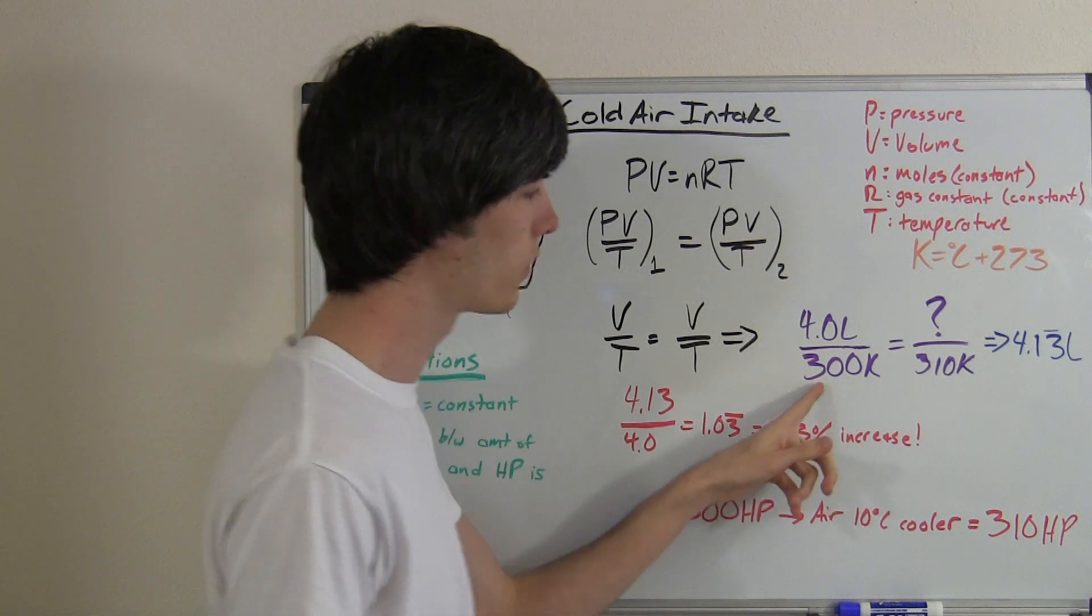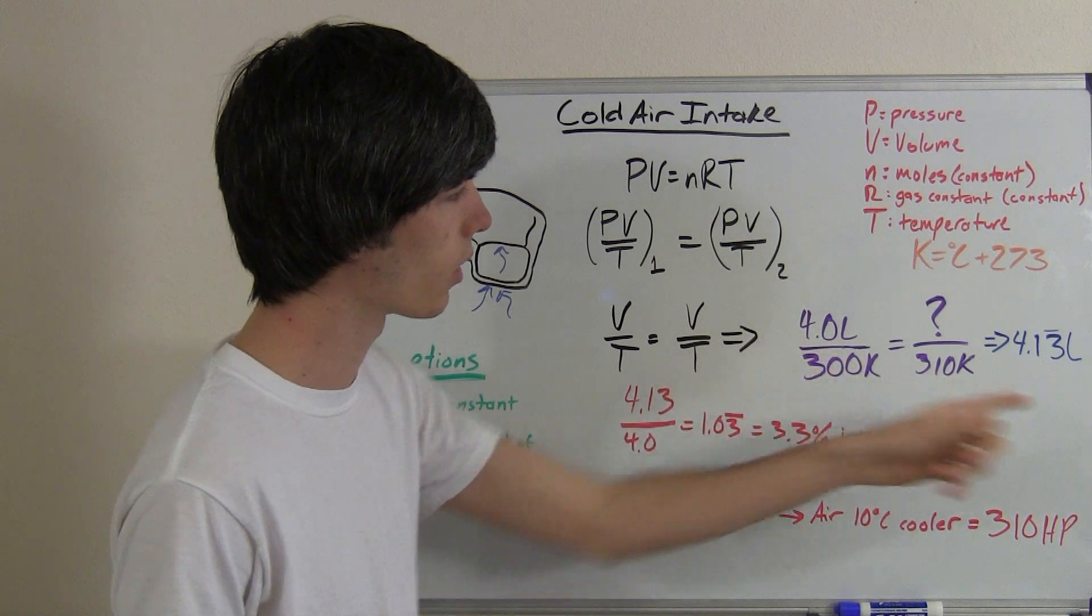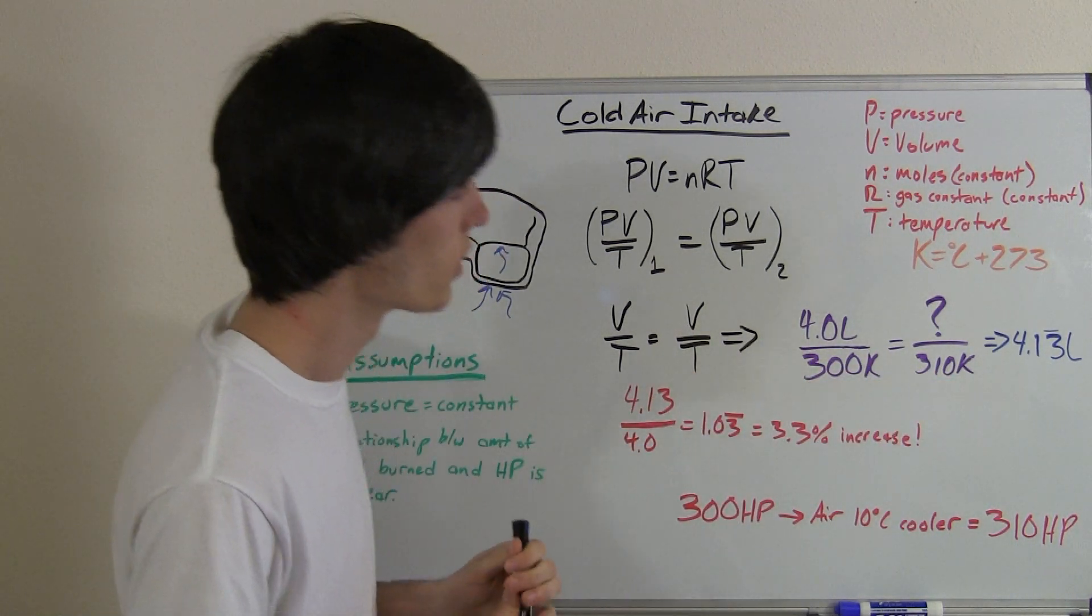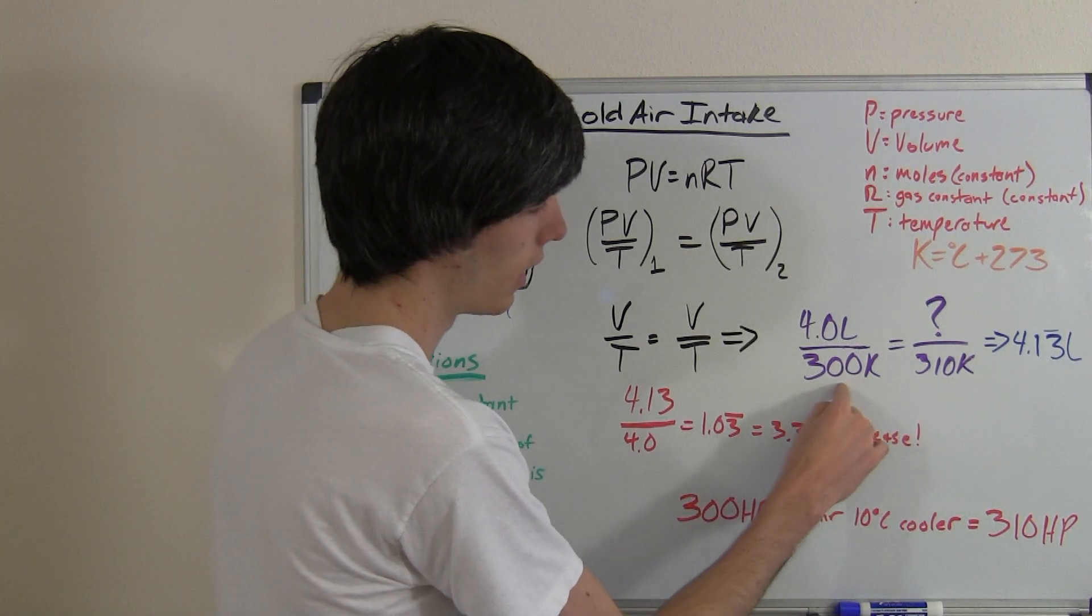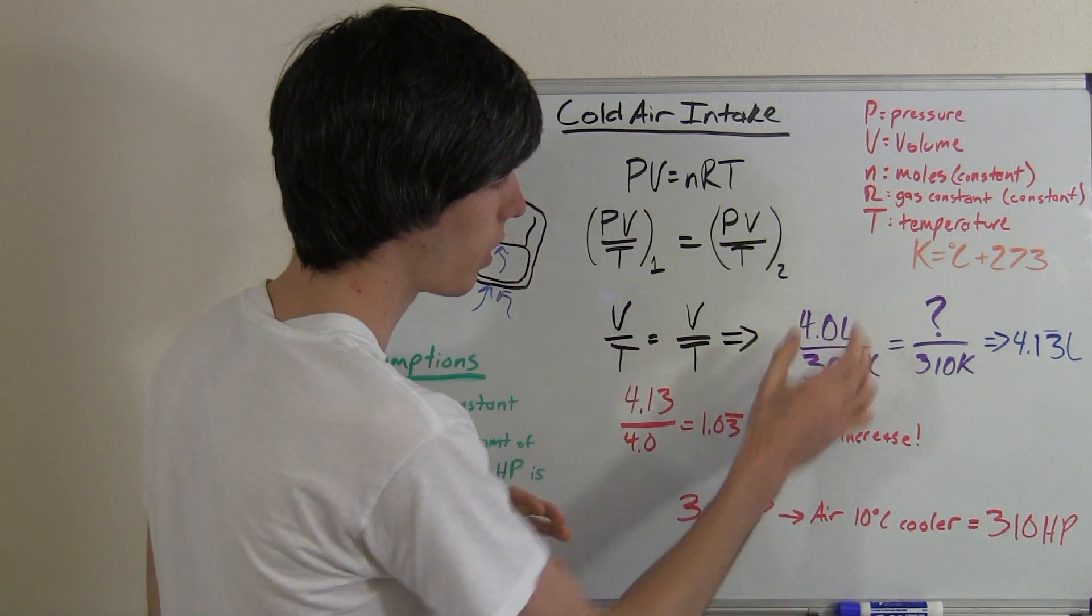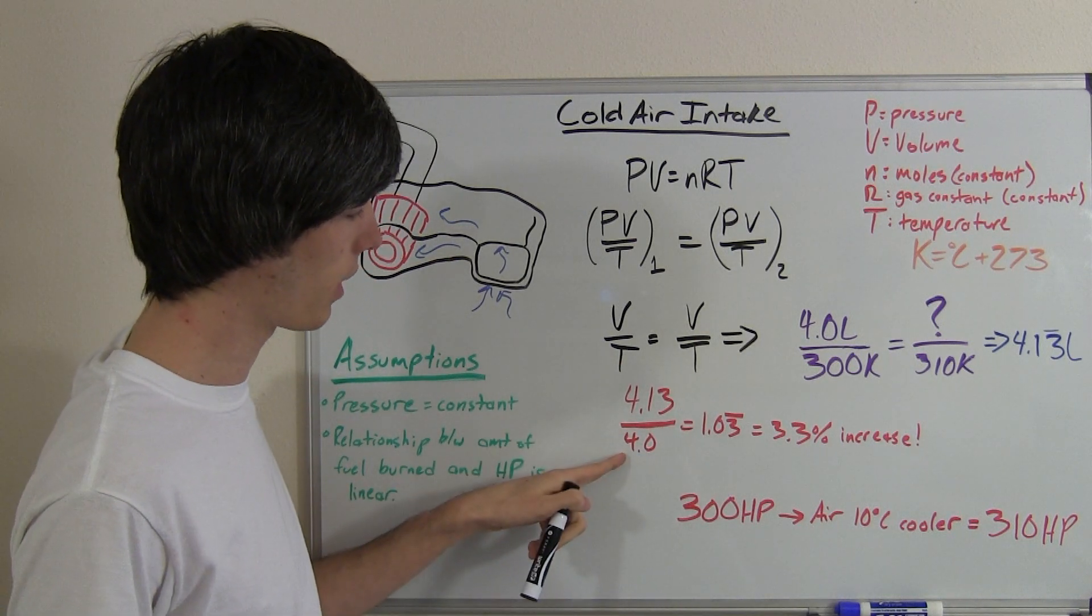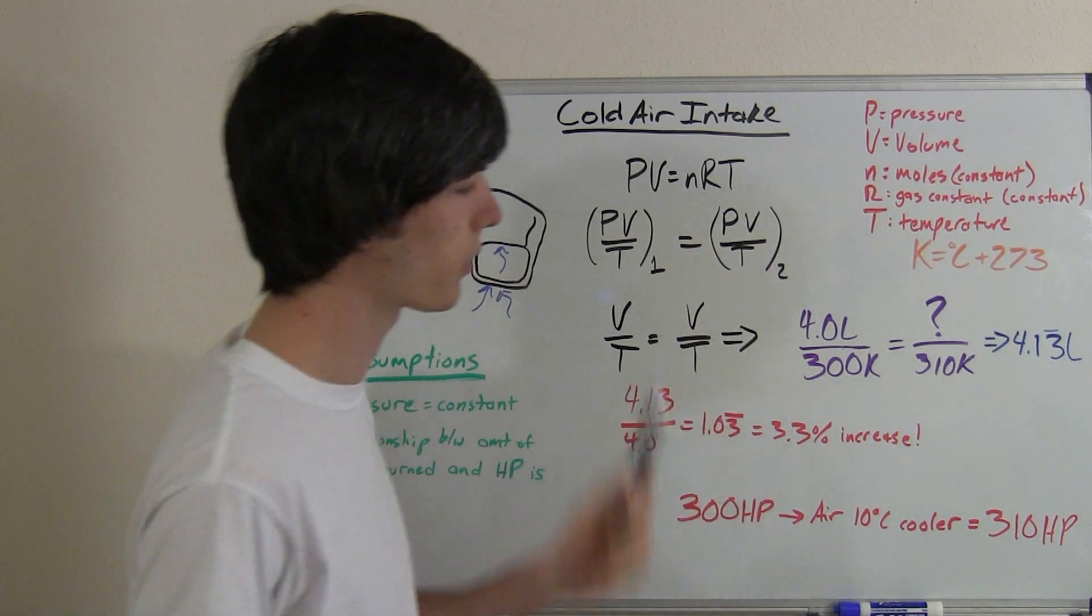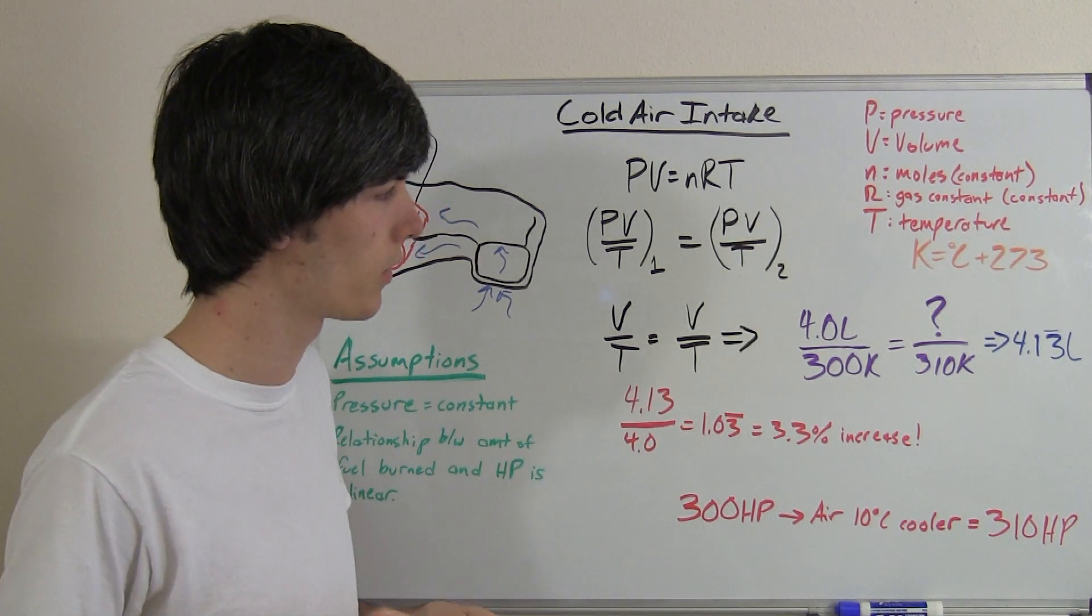So what happens if we increase the temperature of the air by 10 degrees? Well, that same amount of air will take up 4.13 liters of volume. So what this means is by reducing the temperature by 10 degrees, you can have the same amount of air in a smaller space. So you've got 4.13 divided by 4.0, and that's going to give you 1.03 repeating. So you're going to have a 3.3% increase in volume of air just by lowering the temperature 10 degrees Celsius.